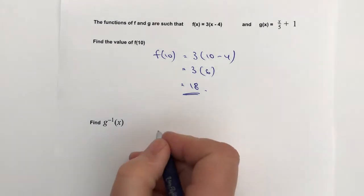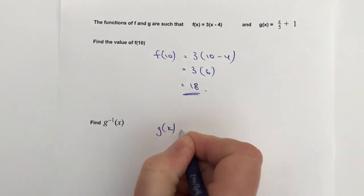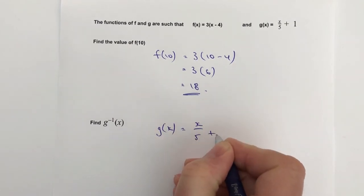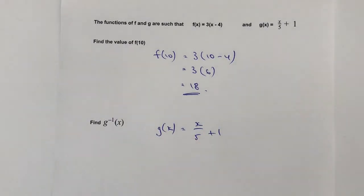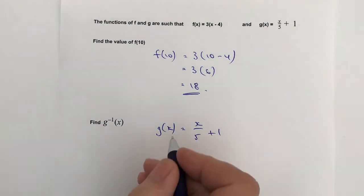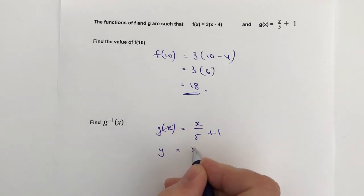What we do is we actually say, well, if we've got g(x) = x/5 + 1, the easiest way of doing that is actually just to pretend for the moment that this g(x) is y.